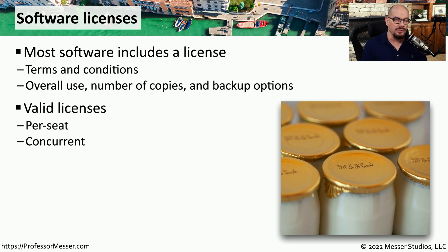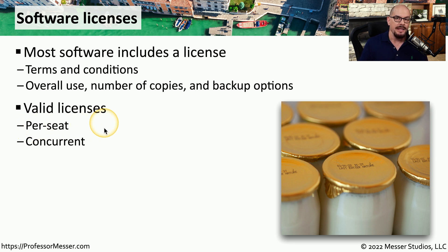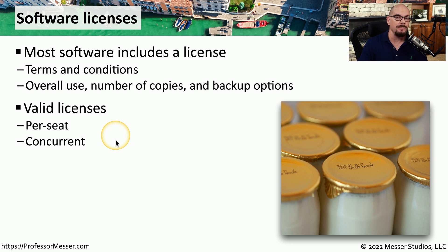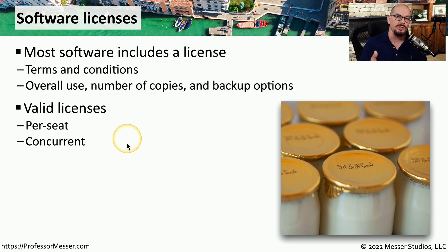A software license may also have descriptions on how the software is to be used. For example, if you purchase 10 licenses of a per seat license, that means there are 10 people you can hand the software to, and only those 10 people can ever use it. You could also purchase a concurrent license, meaning those 10 licenses could all be used at the same time by different people, as long as no more than 10 people are concurrently using that license.